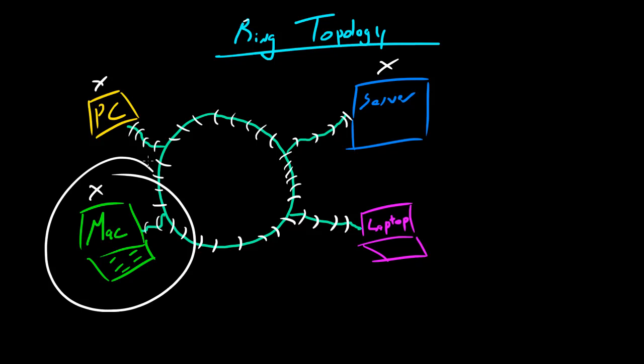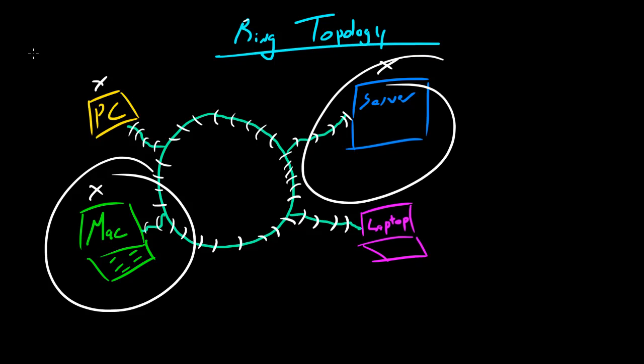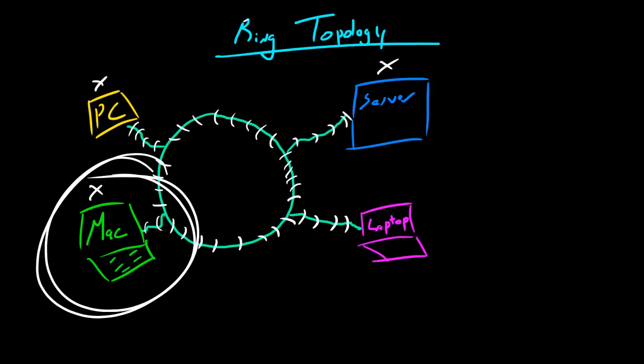The data doesn't really reach an end point — it flows in one main direction, gets what it wants, and always comes back to the source node. That's overall how the ring topology works.